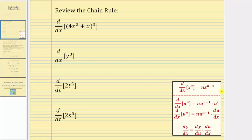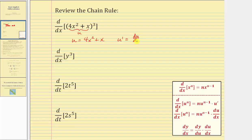Looking at our notes, here we have the basic power rule of differentiation, and here we have the extended power rule of differentiation, where u is the inner function. Notice for our derivative, the inner function u is equal to the quantity four x squared plus x, and therefore u prime, which is the same as du dx, equals the derivative of four x squared plus x with respect to x, which is eight x plus one.